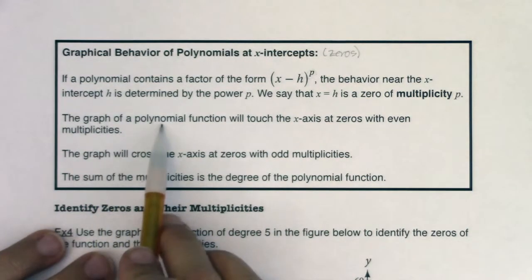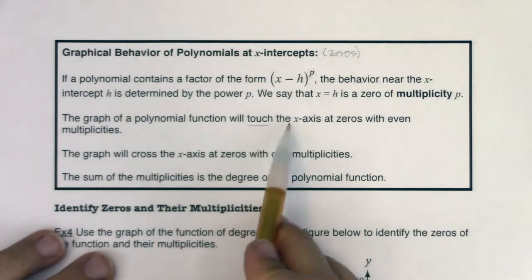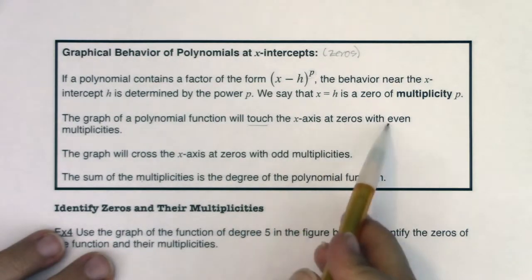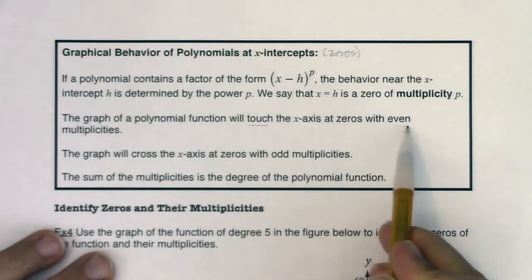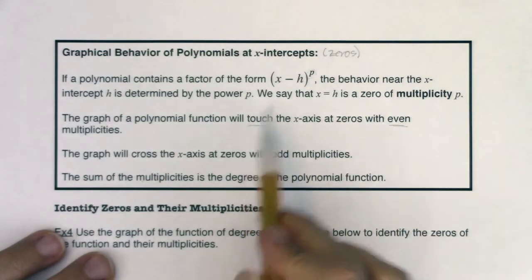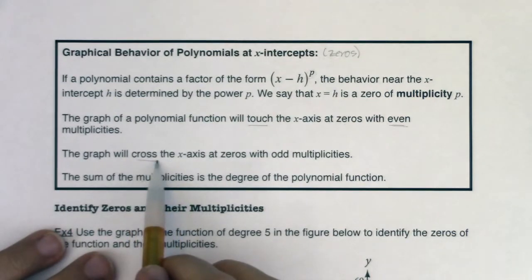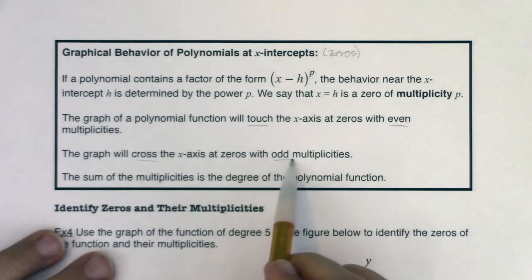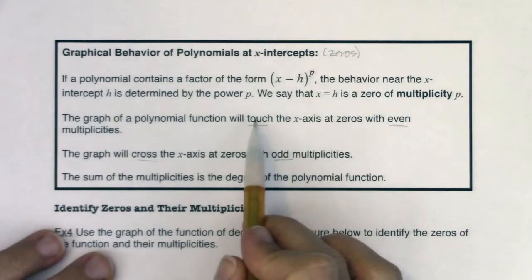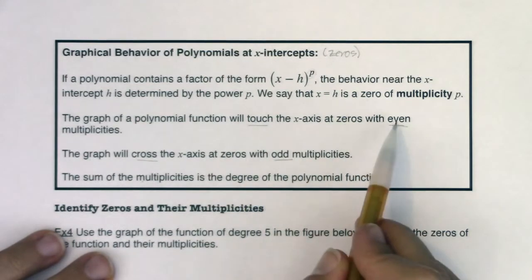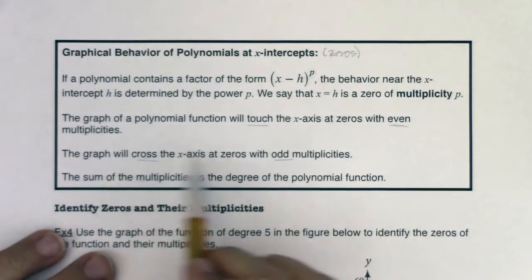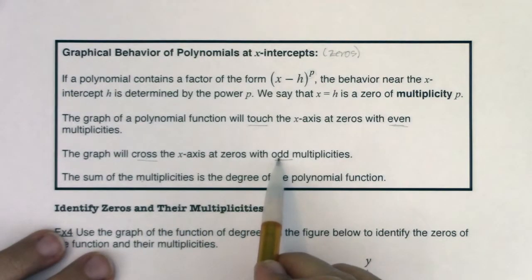The graph of a polynomial function will touch the x-axis at zeros with even multiplicities. So you're going to just touch the x-axis if you have an even power. But the graph will cross the x-axis at zeros with odd multiplicities. You'll touch the x-axis if you have an even power on your factor. You will cross through the x-axis if you have an odd power on your factor.